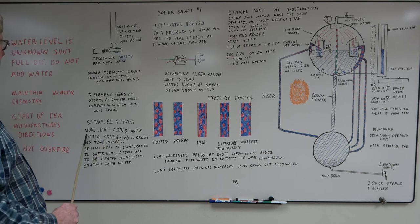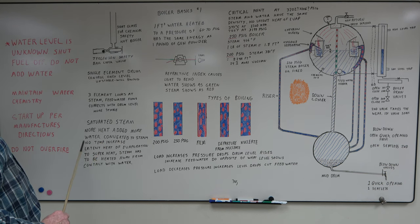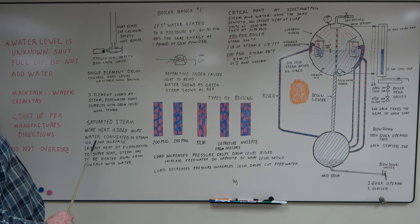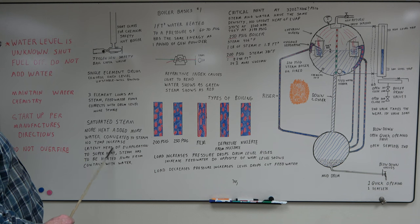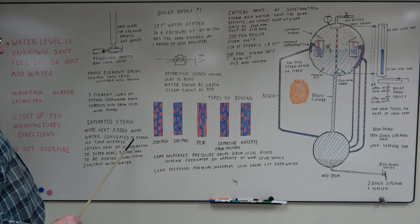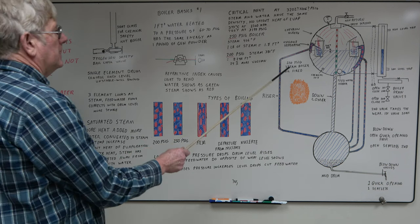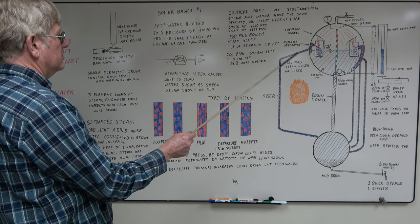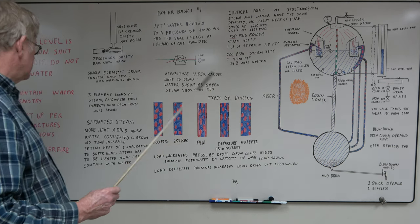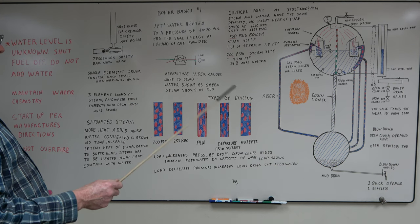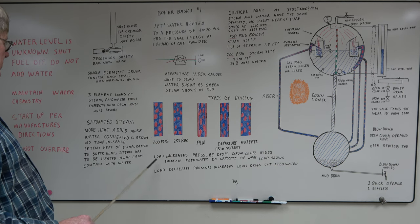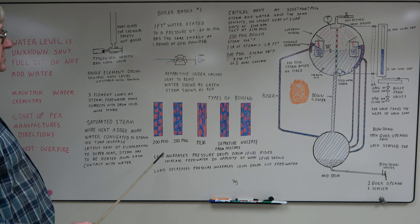The saturated steam, the more heat added, more water is converted to steam. There's no temperature increase. It's a latent heat of evaporation. So if you fire this harder and the pressure stays at 250, you're just going to make more steam. The temperature will still be 406 degrees. The only way to superheat is to get the steam away from the water. Then you can add more heat to the steam that way.